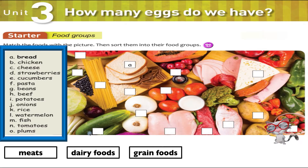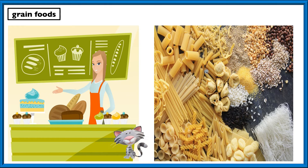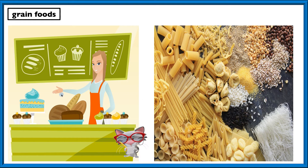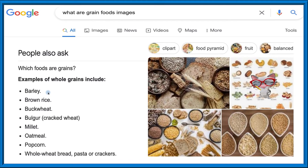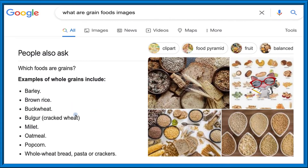Grain foods — grain food is something like rice. Here we have some images: rice in the top right-hand corner, pastas and noodles are all made of grain powder. Bread comes in too — if it's made from wheat or barley, those things come from grain. So you have barley — barley water is very popular in Korea — brown rice, buckwheat noodles very popular, cracked wheat — I've never had that — millet, oatmeal, and popcorn.